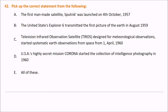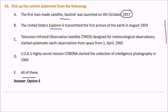Pick up the correct statement from the following — all of these are correct: the first man-made satellite Sputnik was launched on 4th October 1957; United States Explorer 6 transmitted the first picture of the earth in August 1959; TIROS (Television Infrared Observation Satellite) started systematic earth observation from space on 1st April 1960; and USA's secret mission Corona started collecting intelligence photography in 1960.